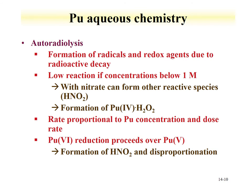One of the things we also see is autoradiolysis — plutonium is radioactive and forms radicals and redox agents due to radioactive decay. These reactions tend to be low if concentrations are below 1 molar. In a nitrate medium, for instance, you can form nitrous acid. You can also form peroxide species as discussed with other actinides. The autoradiolysis change in redox is rate-proportional to plutonium concentration and dose rate, which also relates to the half-life of the plutonium isotope in solution.